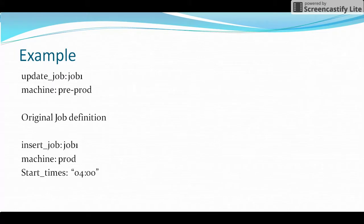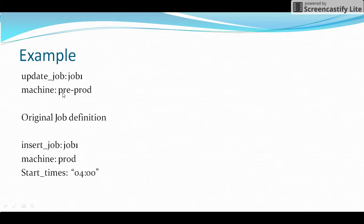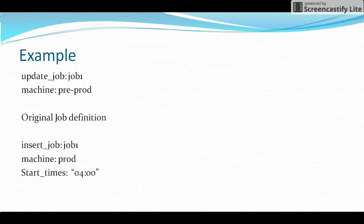For example, the original job definition is: insert_job: job1, machine: prod. If we want to change the machine from prod to pre-prod, we use update_job for the job we want to modify. So we specify job1, then the machine attribute with the new value: pre-prod.